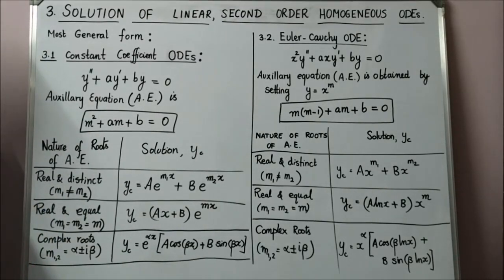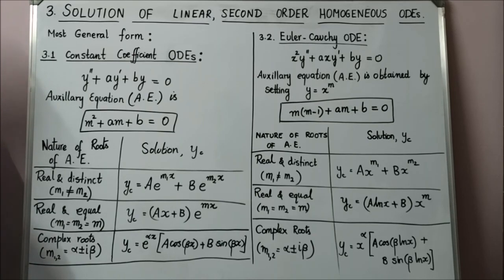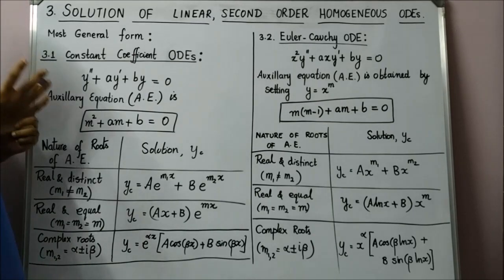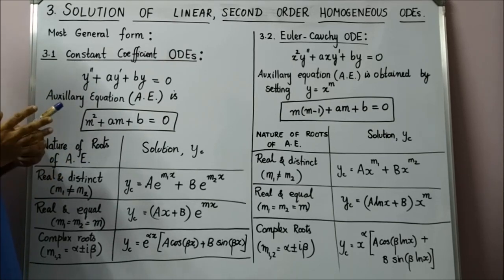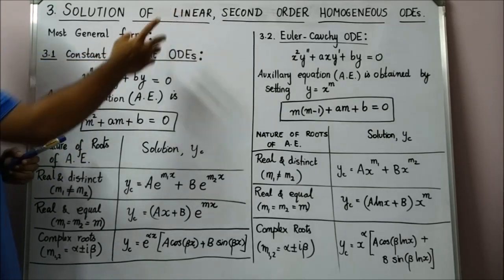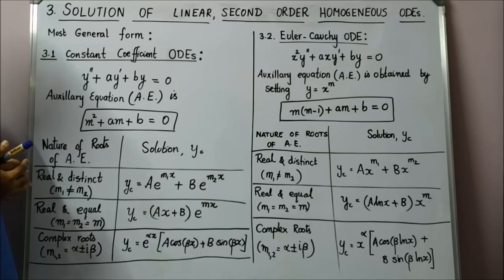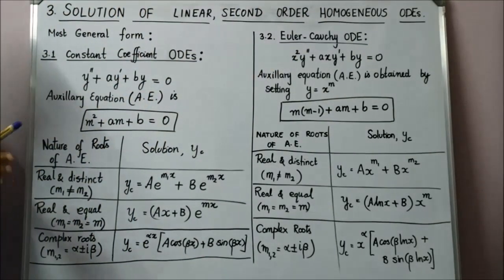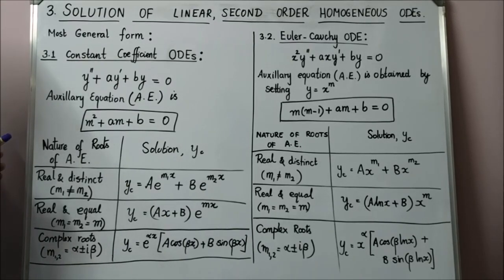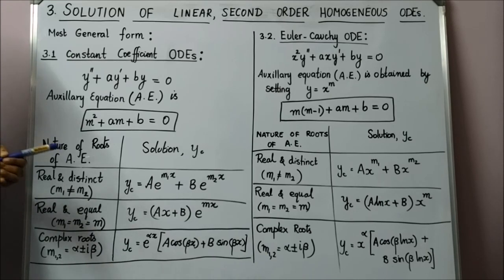Now that we have done first order equations, it is time to start with second order ODEs. Since we are starting second order ODEs, let's take a very simple case. We are going to assume, first of all, a linear ODE. Second assumption is, it is also homogeneous. These are going to simplify the solution greatly. So we are going to only look at solutions of linear second order homogeneous ODEs.